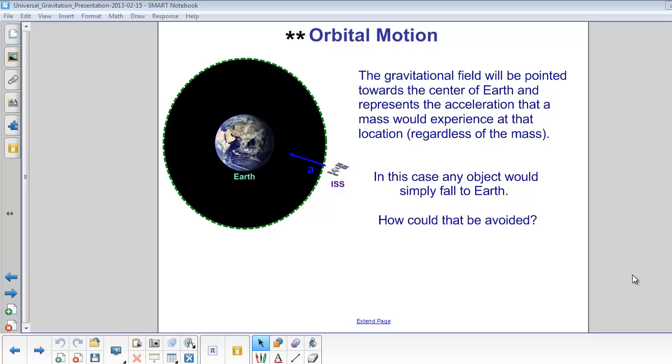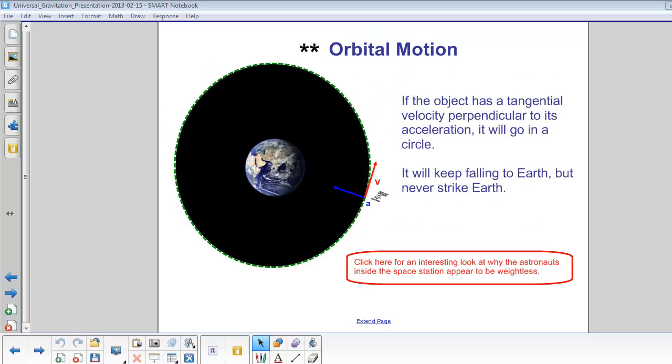To help you think of the answer, think of another situation where acceleration is towards the center of something. If you thought that diagram looked a lot like our circular motion problems, you're right. If that object has a tangential velocity perpendicular to its acceleration, it will go in a circle. It will keep falling but never reach the Earth.